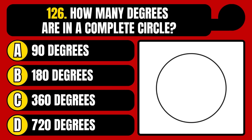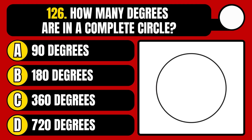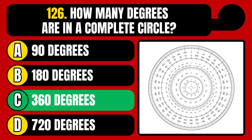How many degrees are in a complete circle? 90 degrees, 180 degrees, 360 degrees, or 720 degrees? The correct answer is option C, 360 degrees.